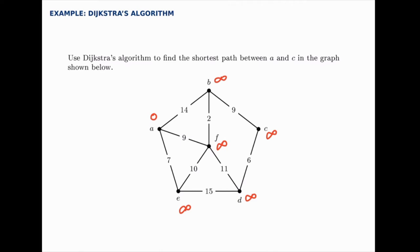Starting with a, we're going to mark the distance to all of its neighbors. The neighbors are b, f, and e, and the distance to each of those is just the straight line distance. From a to b the distance is 14, so we'll erase the current distance and write 14 instead. At f the distance is 9, and we can get to e with a distance of 7. At that point we mark a off — we've checked it.